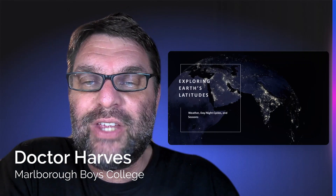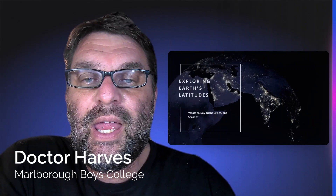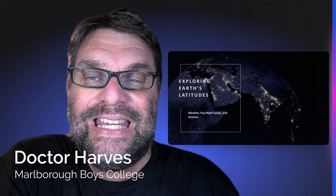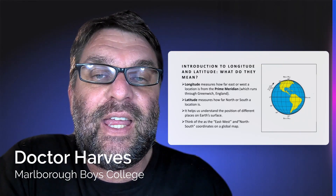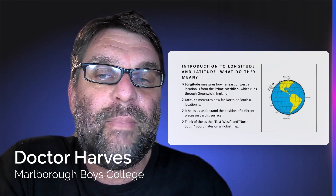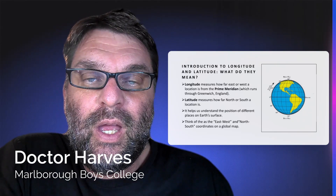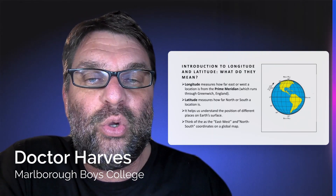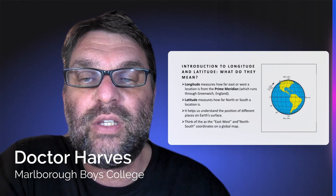Welcome back physicists and earth space scientists, continuing on with the astronomical cycles achievement standard, looking at the relationships between the Earth, Moon, and Sun systems. Today we're exploring the Earth's latitudes and how they affect the weather, day-night cycles in relation to longitude, and the seasons. Longitude measures how far east or west you are on Earth, based from the prime meridian at zero degrees, which runs through Greenwich, England. Latitude measures how far north or south you are from the equator, and these two values together determine your position on the globe.